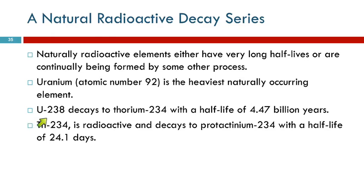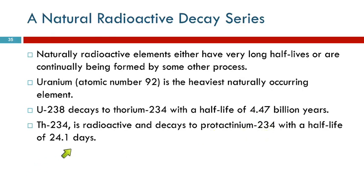Uranium-238 decays to thorium-234. That half-life is four and a half billion years, so that takes a while. This daughter nuclide, thorium-234, is radioactive — it decays to protactinium-234. That half-life is 24.1 days. So once thorium-234 is formed, it decomposes fairly quickly compared to the original uranium.